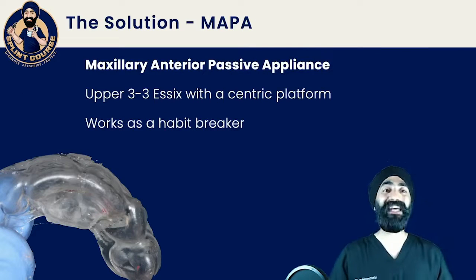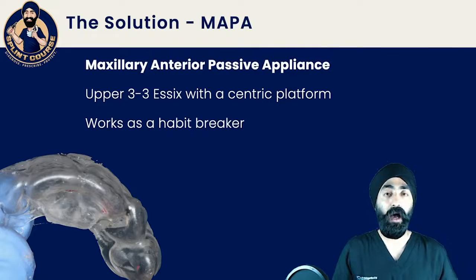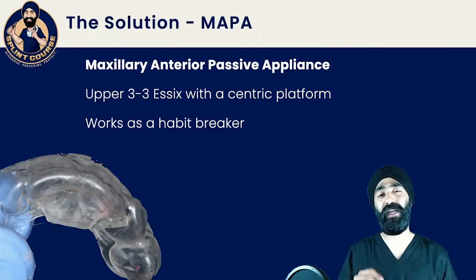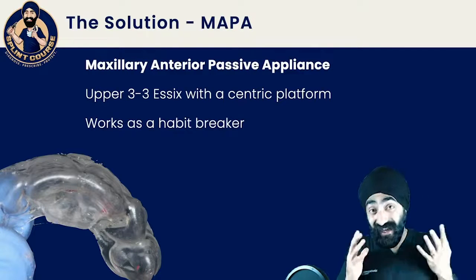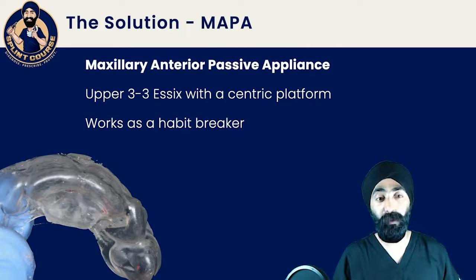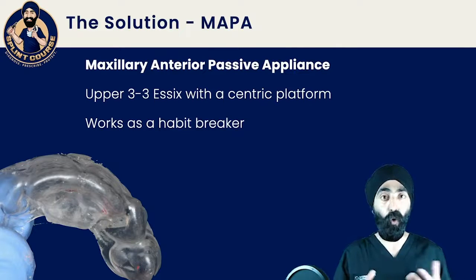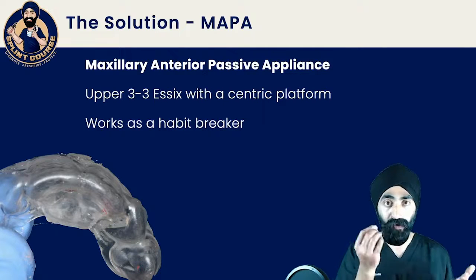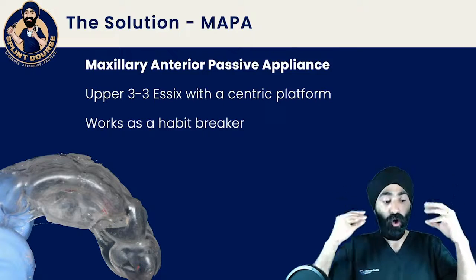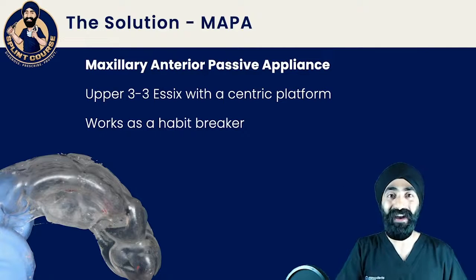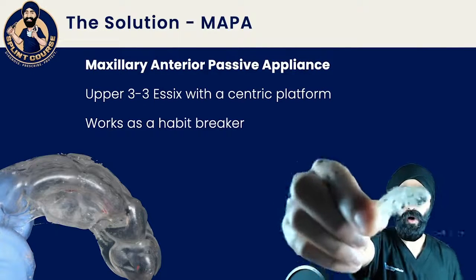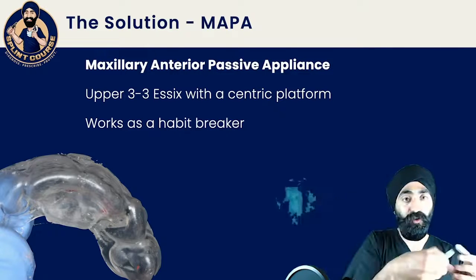The solution is a MAPA appliance — Maxillary Anterior Passive Appliance. It's essentially an upper three-to-three Essex with a centric platform. Every time the patient's teeth come together, it acts as a reminder: 'Oh, I'm touching.' In fact, I've got mine right here — let me put it on for you.